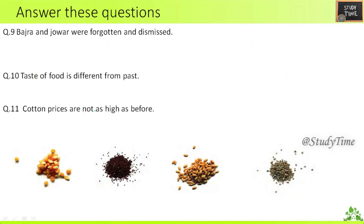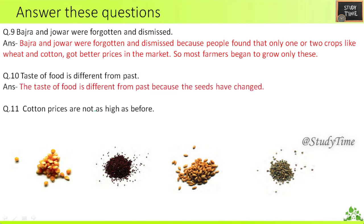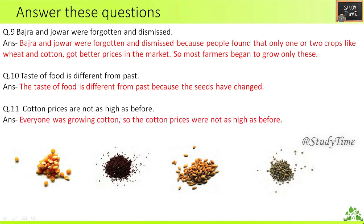Ninth question — why were bajra and jowar forgotten and dismissed? Bajra and jowar were forgotten because people found that only one or two crops like wheat and cotton got better prices in the market, so farmers began to grow only these. Tenth question — is the taste of food different from the past? Yes, the taste of food is different from the past because the seed has changed. Eleventh question — cotton prices are not as high as before because everyone was growing cotton.